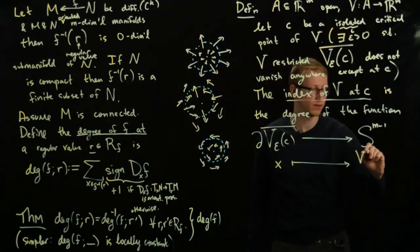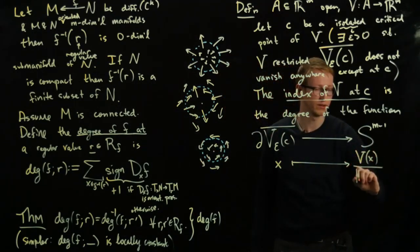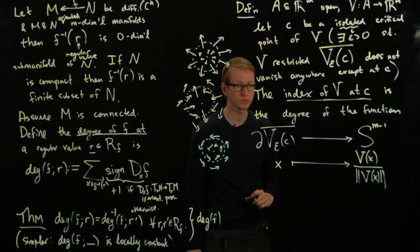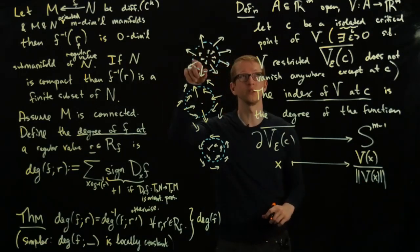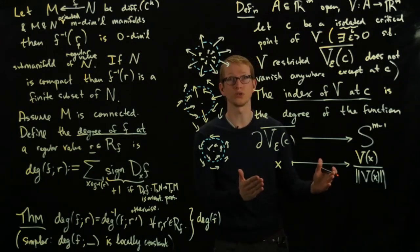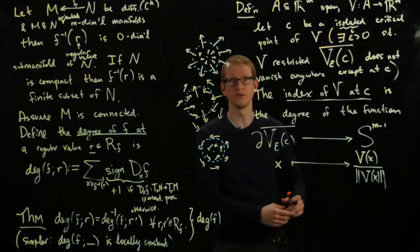So we take V of x, and then we rescale it. And now you see why we require that it doesn't vanish because then otherwise this might not be even well defined. And because this vector field is assumed to be smooth, if you assume it's smooth, this function is also smooth because it's the quotient of two smooth functions.